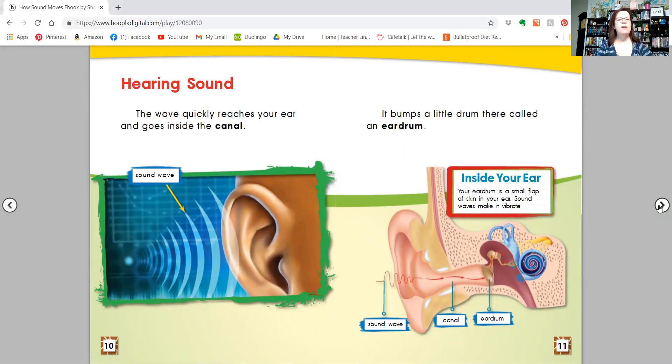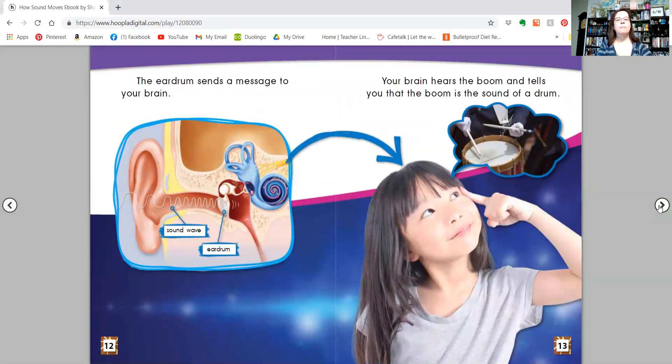Hearing sound, the wave quickly reaches your ear and goes inside the canal. It bumps a little drum there called an eardrum. Inside your ear is a small flap of skin. Sound waves make it vibrate. That's your eardrum. The eardrum sends a message to your brain. Your brain hears the boom and tells you that the boom is the sound of a drum.